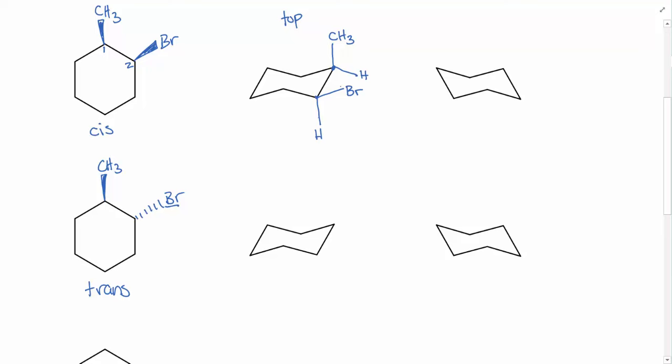To figure out cis or trans if you're given just the chair conformation, look at one carbon and its two substituents — the H and the Br — and note that the Br is closer to the top of the ring. Then look at the other carbon: there's an H and a CH3, and the CH3 is closer to the top of the ring. Both non-hydrogen substituents are closer to the top of the ring, so this is cis.